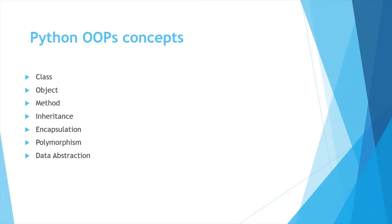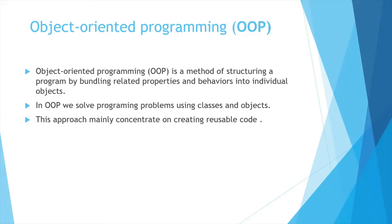So let's start today's topic. First of all, what is object-oriented programming? Object-oriented programming is a programming approach in which we structure a program by bundling related properties and behaviors into individual objects. In this approach we actually solve the programming problems using classes and objects, and this approach mainly concentrates on creating usable code.